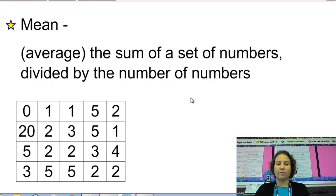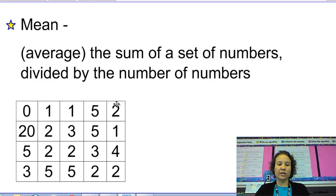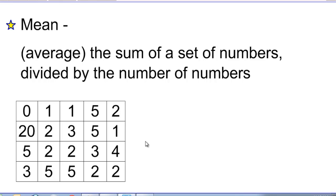So what is mean? Mean — a lot of times we'll use the word average to mean the same thing. The way that we find mean is by adding up a set of numbers — the sum of a set of numbers — divided by the number of numbers. Down here I have a collection of numbers. Someone did a survey; they asked 20 students in school how many times every day they go and get a drink from the drinking fountain. These numbers are everybody's responses, those 20 students' responses. So if I want to find the mean, I'm going to add up all of those numbers and then divide by the number of numbers, which would be 20.